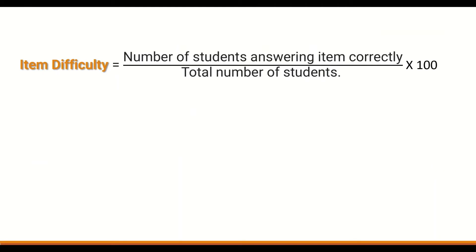To calculate the item difficulty, use the following equation: count the number of students answering the item correctly, divide that by the total number of students, then multiply the product by 100 to generate an item difficulty percentage.